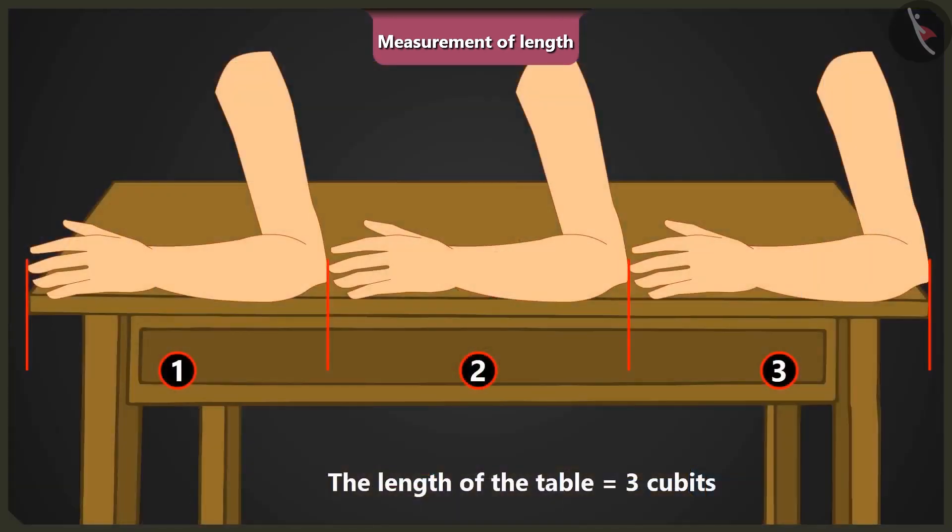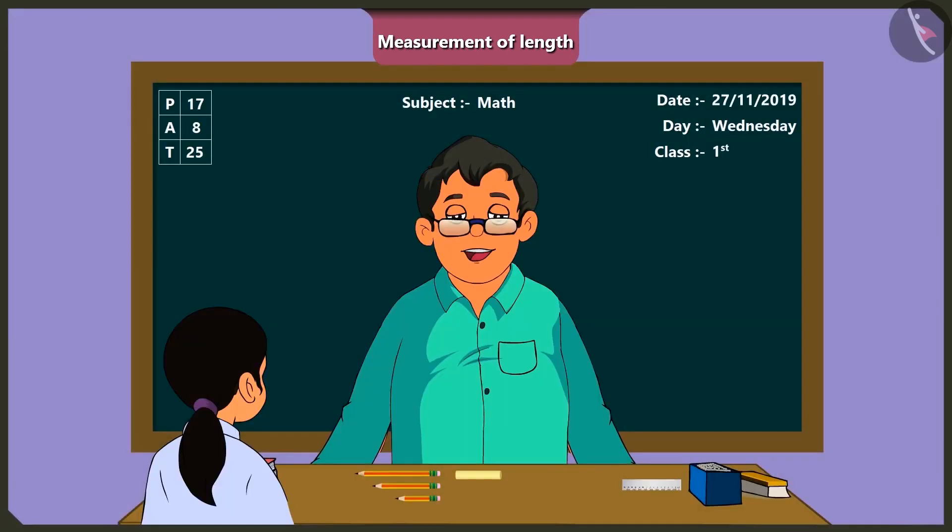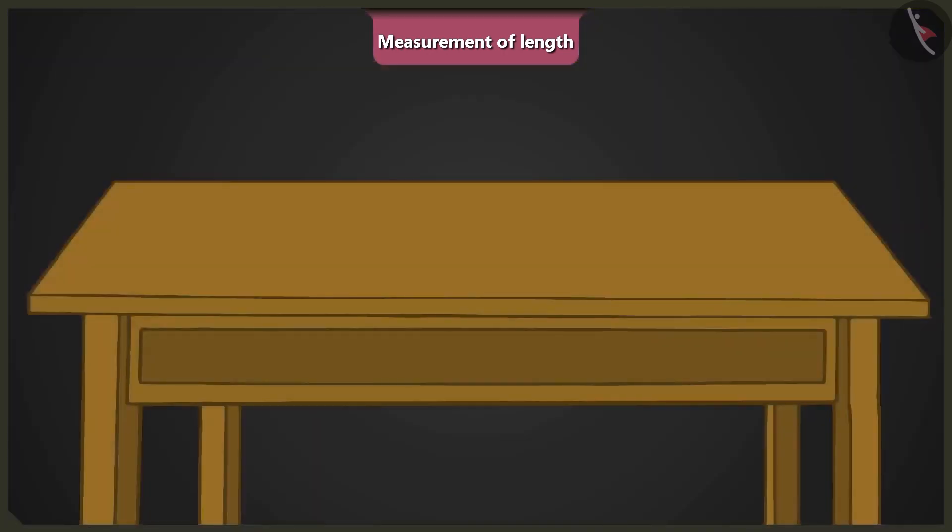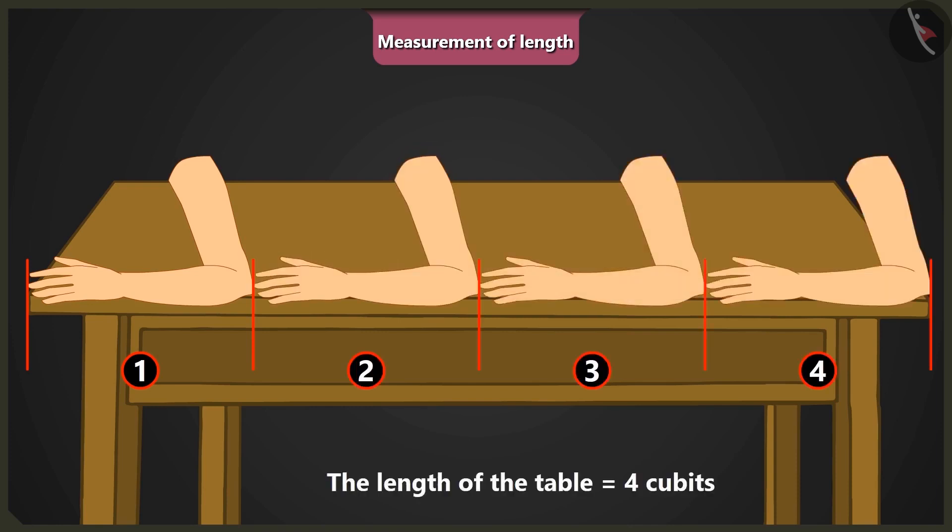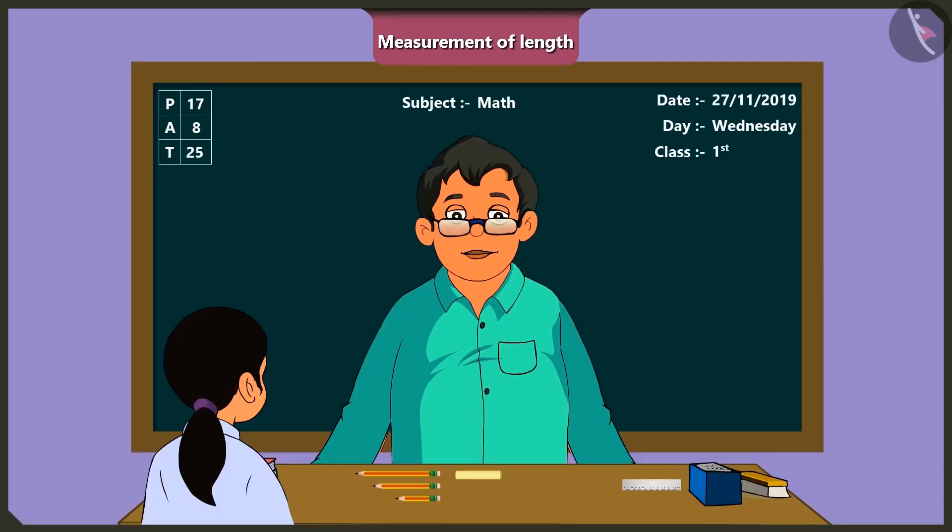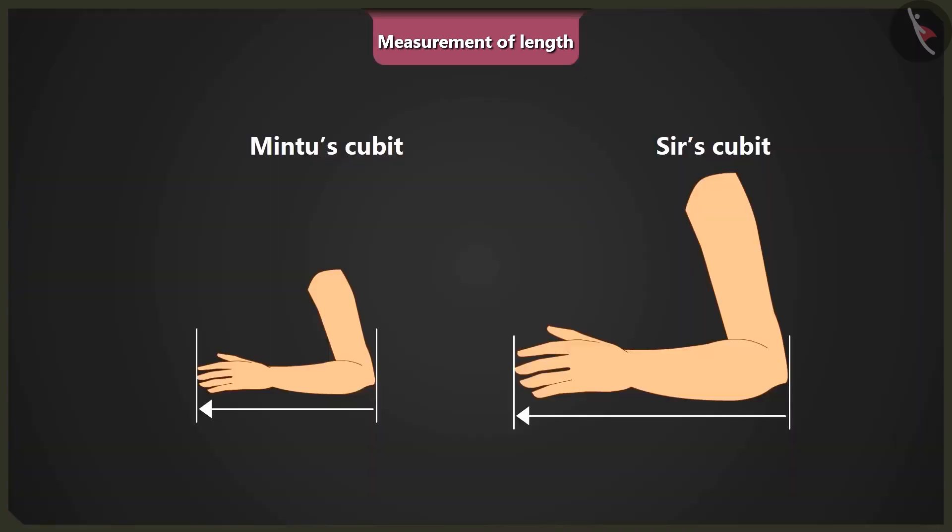this table. It is equal to three cubits of my arm. Mintu, now you tell me how long is this table when you measure it with your arm. The length of this table is one, two, three, and four cubits of my arm. That's right. Can you tell me why this happened? Yes sir, because the length of my arm